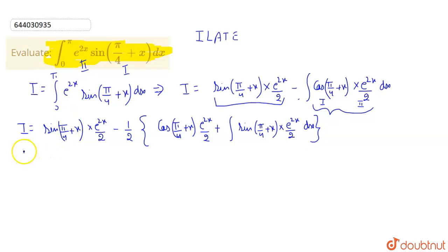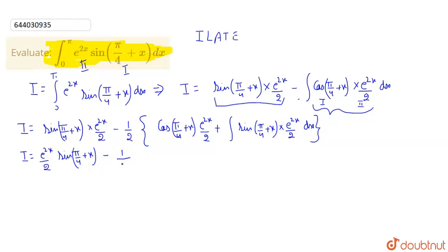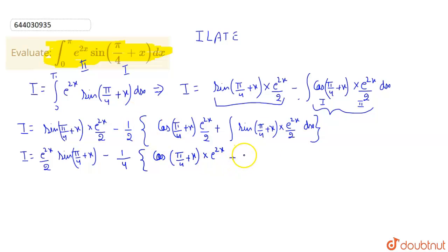On further solving, I becomes e^(2x)/2 · sin(π/4 + x), minus taking 1/2 common outside the curly braces, giving minus 1/4 · cos(π/4 + x) · e^(2x), plus the integral of sin(π/4 + x) · e^(2x) dx. This last integral is the same as I, which we were finding from the start, so we recognize it as I.